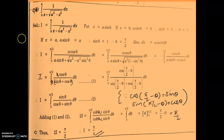Since it is a substitution method question, we have to change the lower and upper limits also. If x equal to 0, then 0 equal to a sine theta, therefore sine theta equal to 0, therefore theta equal to 0. If x equal to a, then a sine theta equal to a, sine theta equal to 1, therefore theta equal to pi by 2. Because theta equal to sine inverse 1, and sine inverse 1 is pi by 2, that is 90 degrees.